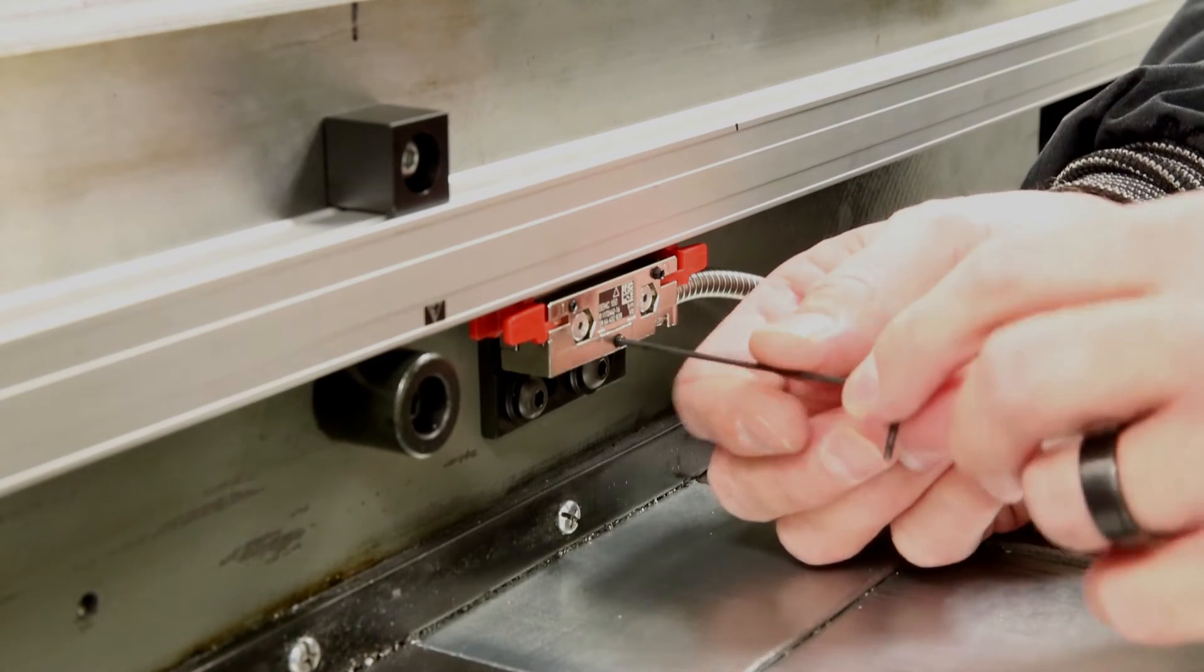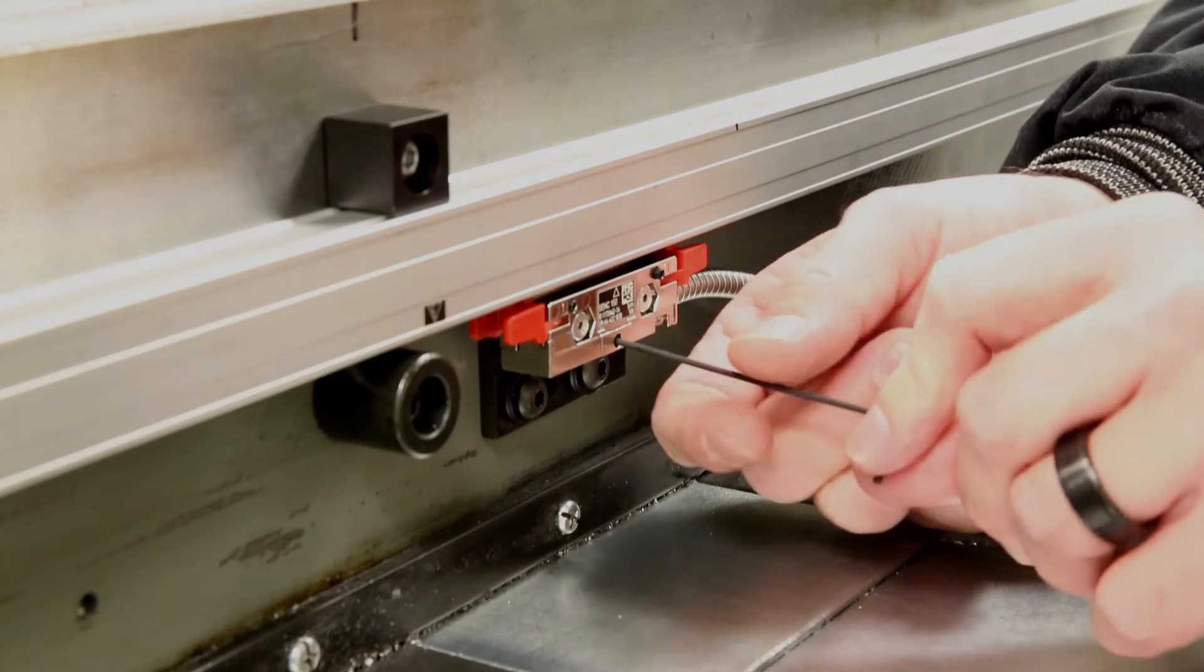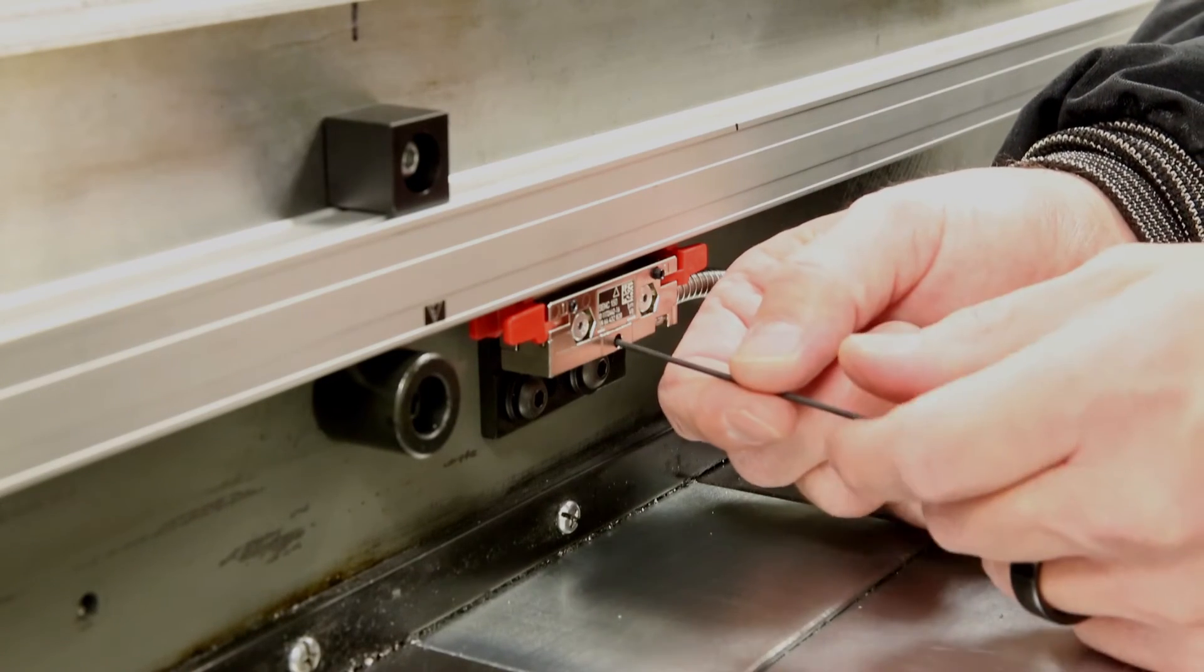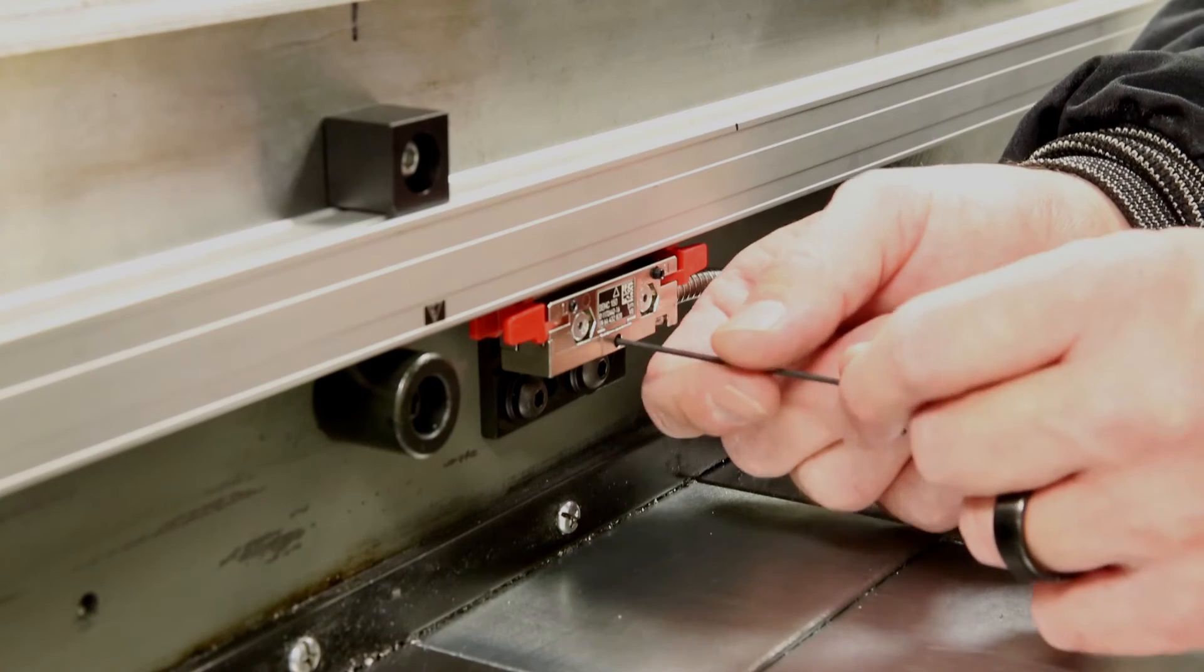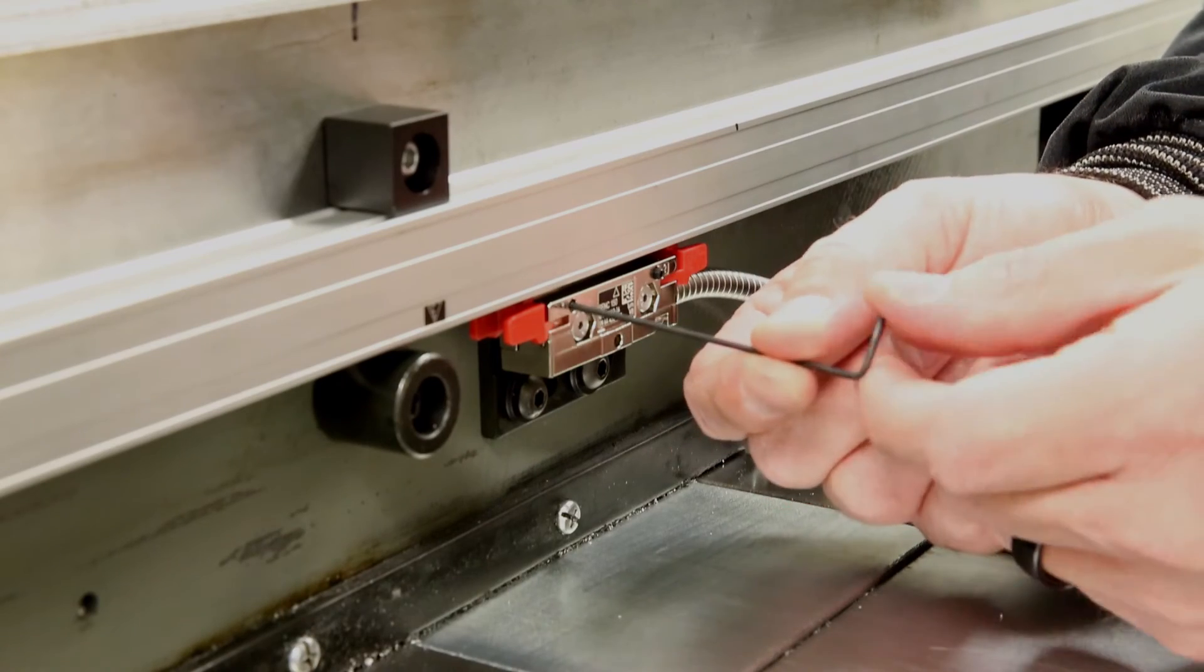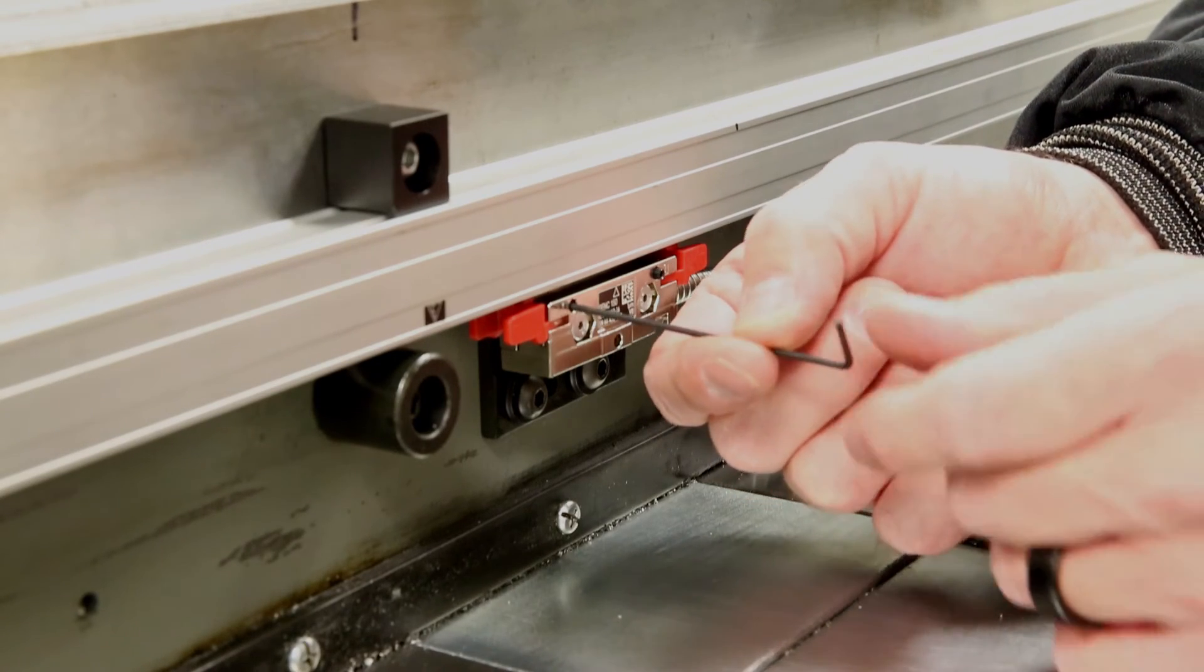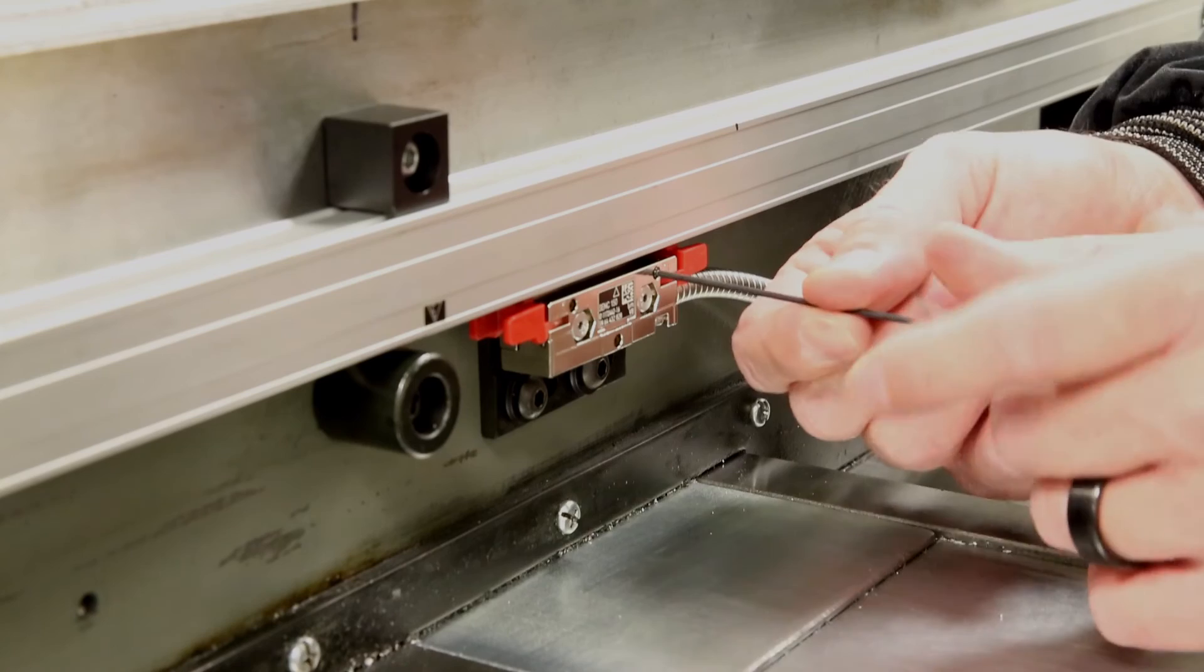Next, we're going to put the leveling screws through the reader head to just touch the bracket. Make sure not to tighten these. Just touch the bracket, and once it touches, remove the Allen key and do the two other screws.